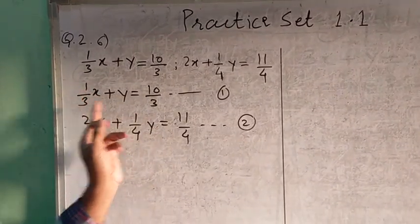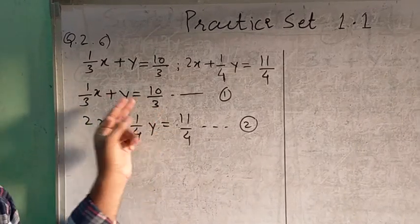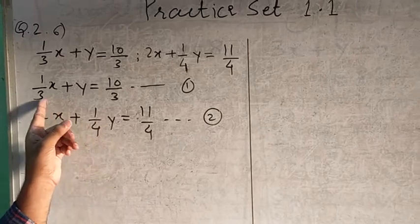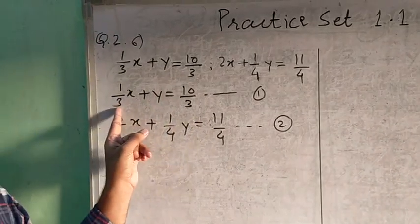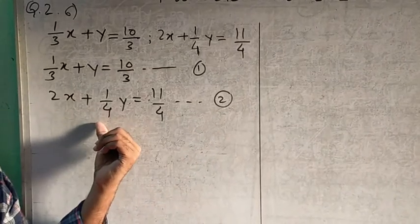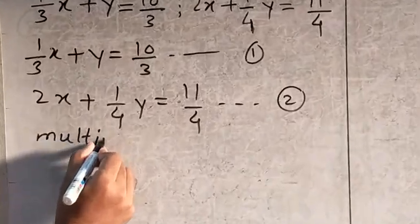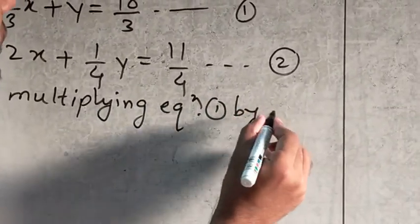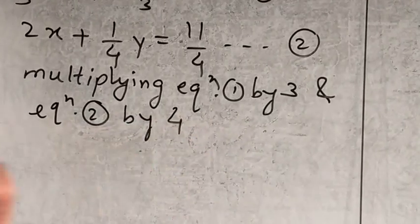Looking at equation 1: we have fractions 1 upon 3 and 10 upon 3. The main form is Ax plus By equals C, but the problem here is that the numbers are fractions. To handle this, we will multiply — equation 1 by 3 and equation 2 by 4 — to clear the fractions.